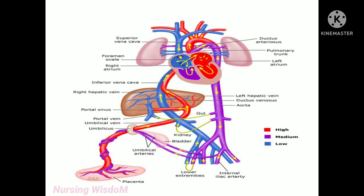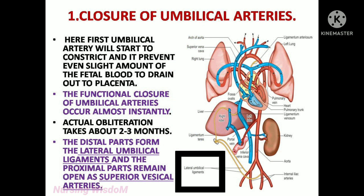Let's see what changes occur after cutting the umbilical cord. First, closure of umbilical arteries: the umbilical artery will start to constrict and it prevents even a slight amount of fetal blood from draining out to the placenta. The functional closure occurs almost instantly. Actual obliteration takes about two to three months. The distal parts form the lateral umbilical ligaments and the proximal parts remain open as superior vesicle arteries.